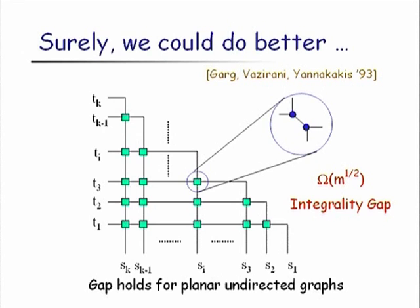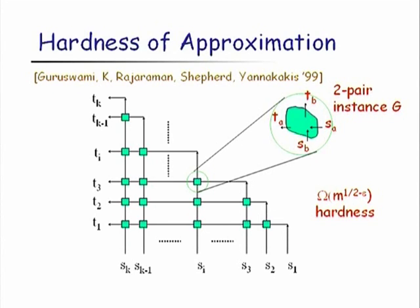This integrality gap holds for planar undirected graphs — a very simple class. If the graph is directed, this gap can be turned into a hardness of approximation result. The two-pair problem on directed graphs is NP-hard, and replacing the green blob gadgets with a two-pair directed gadget shows that if the gadget has a solution, all pairs can be routed; otherwise at most one pair can be routed.